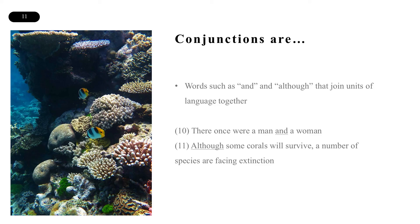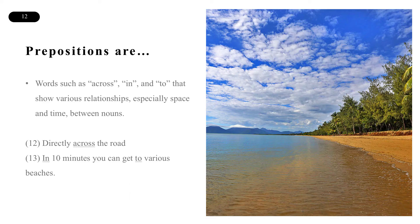Conjunctions are words such as and and although that join units of language together. Here are a couple of examples. And prepositions are words such as across, in, and to, that show various relationships — especially space and time relationships — between nouns.